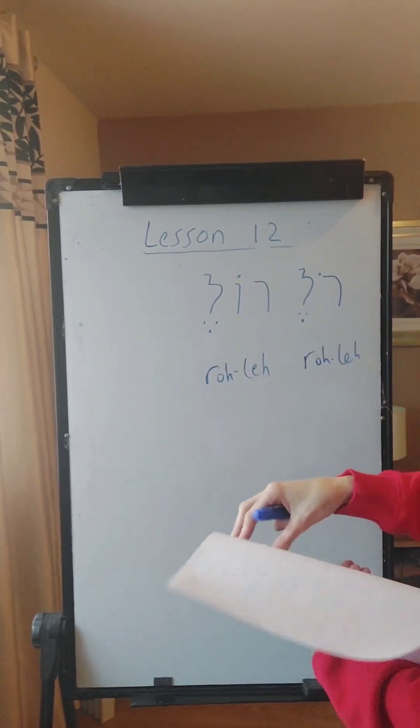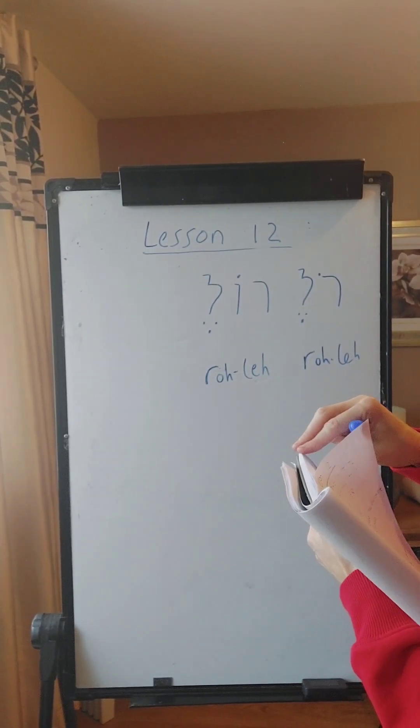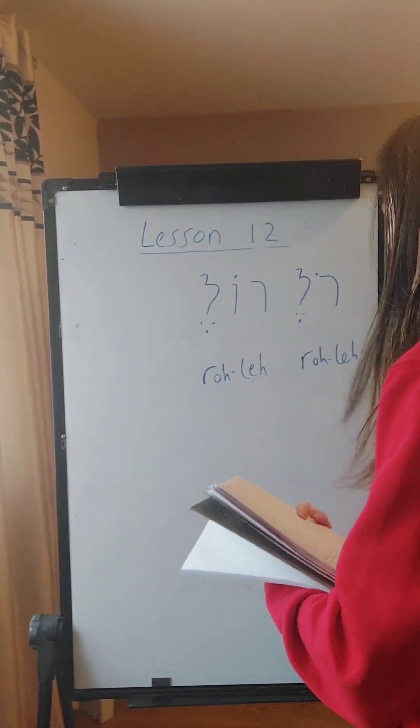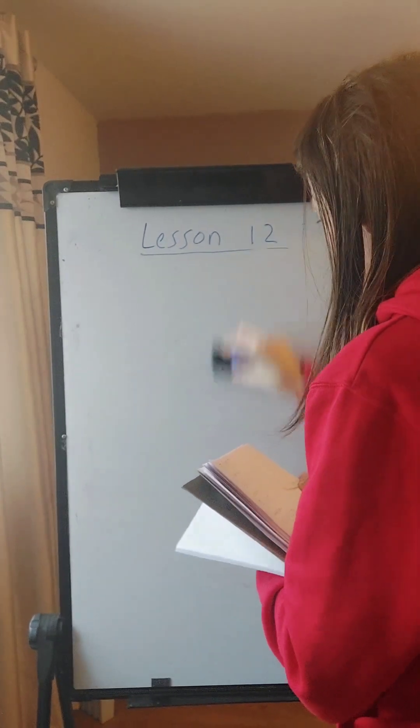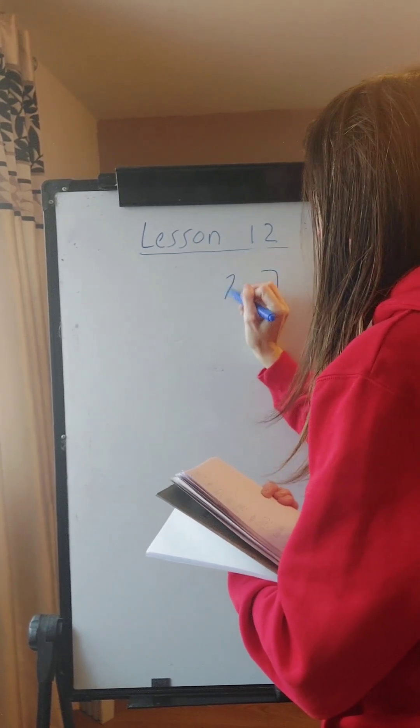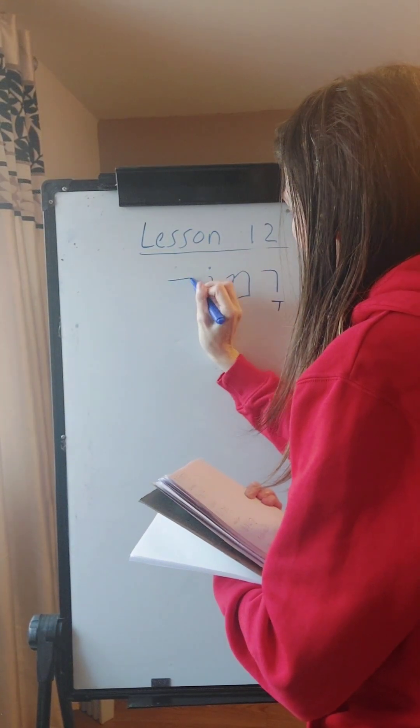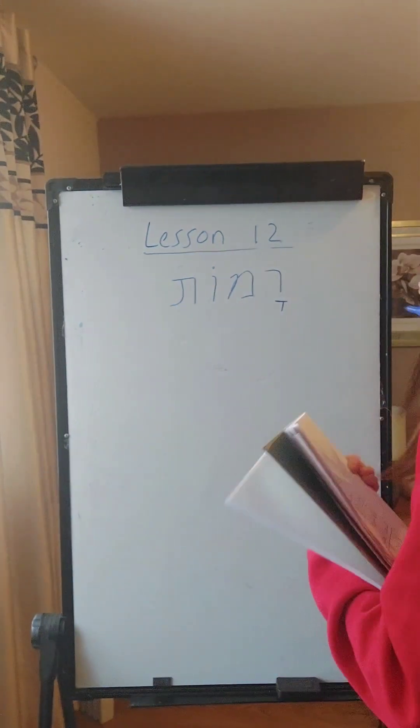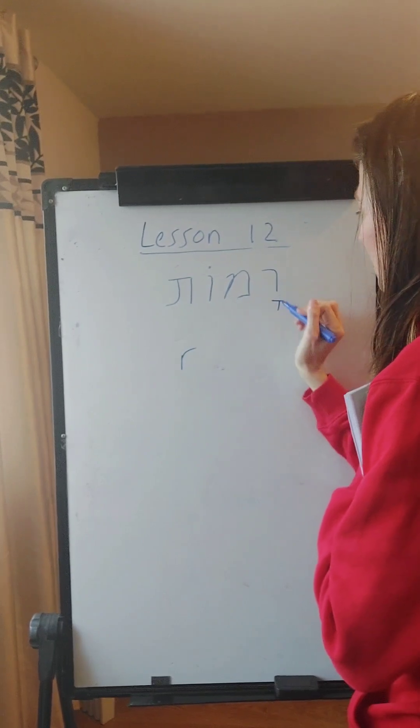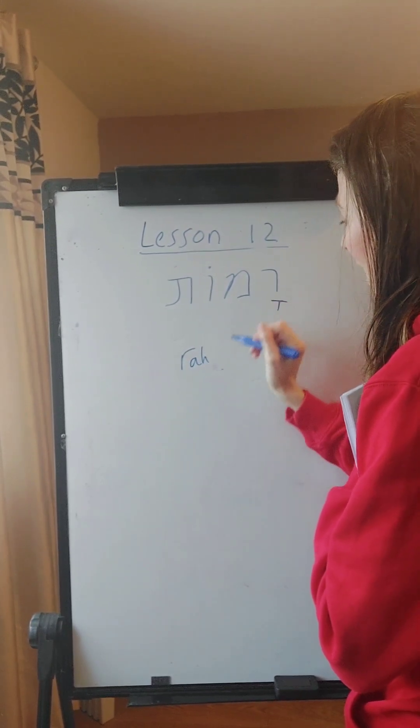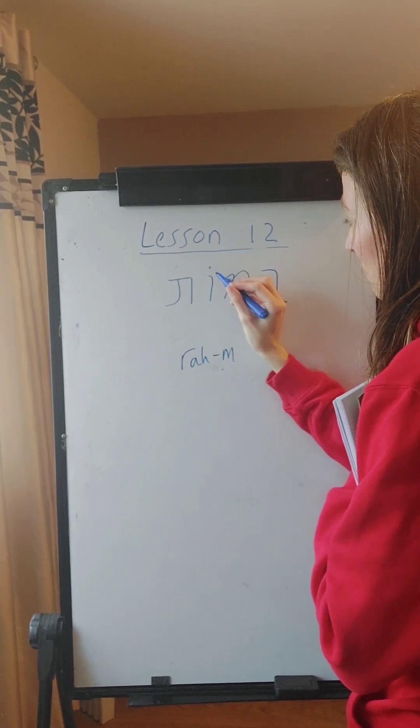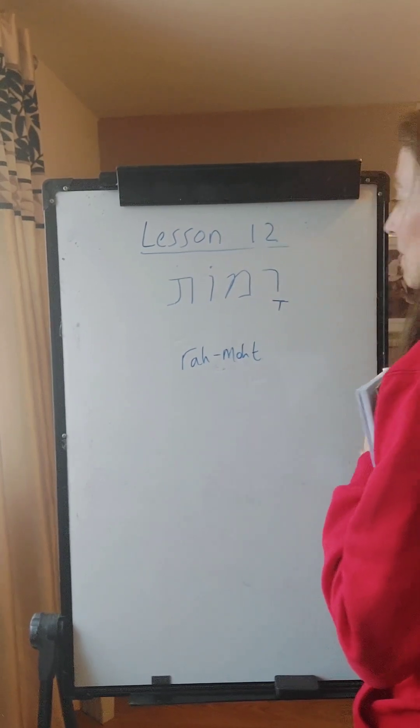So here are the two different ways you can write the O vowel. Practice some more little words. Okay, so look at the letter: it's the Resh, R, the A vowel underneath, Ra. Go to the next syllable which is the Mem, the O vowel by the side, and it finishes with the Tav. Ramot.